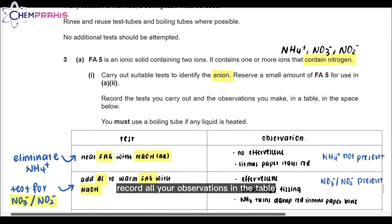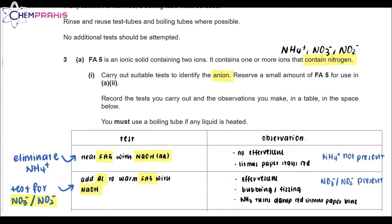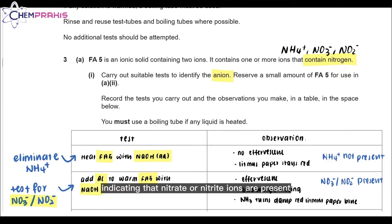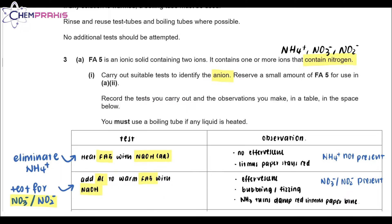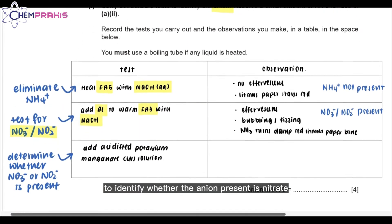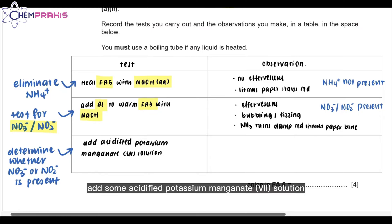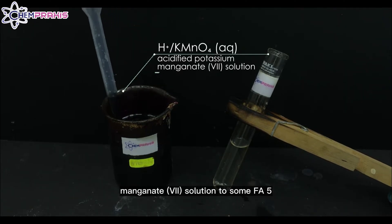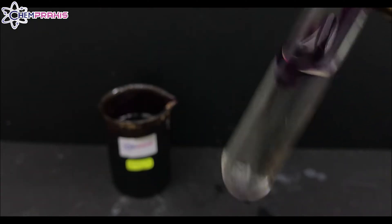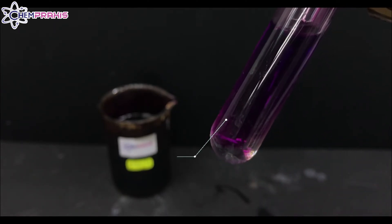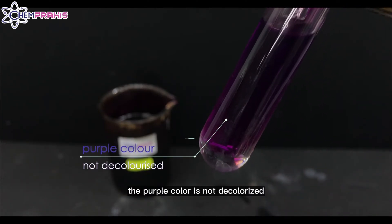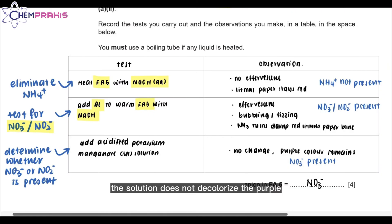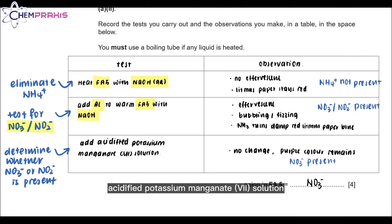After heating, the litmus paper still stays red, and the ammonia gas produced turns the red litmus paper blue. Record all observations in the table. For the first test, no gas is produced, so the ammonium ion is not present. In the second test, ammonia gas is produced, indicating that nitrate or nitrite ions are present. To identify whether the ion is nitrate or nitrite, we'll add some acidified potassium manganate solution. The purple color is not decolorized, so we know that the nitrate ion is present.